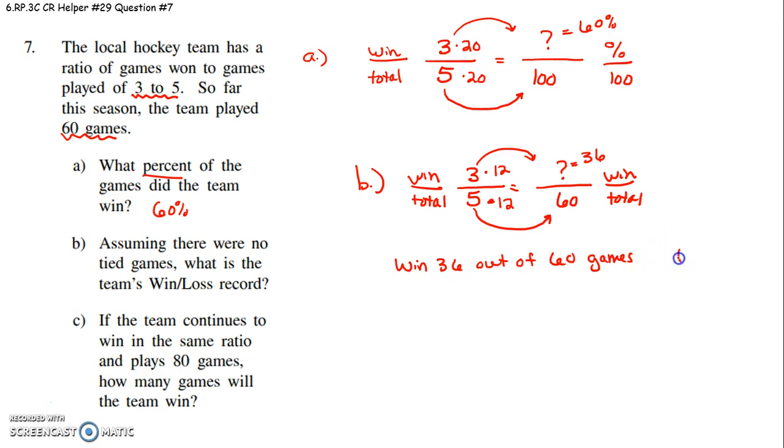How many did they lose? So if I take 60 minus 36, they lost 24. So their win-loss record was 36 wins to 24 losses.